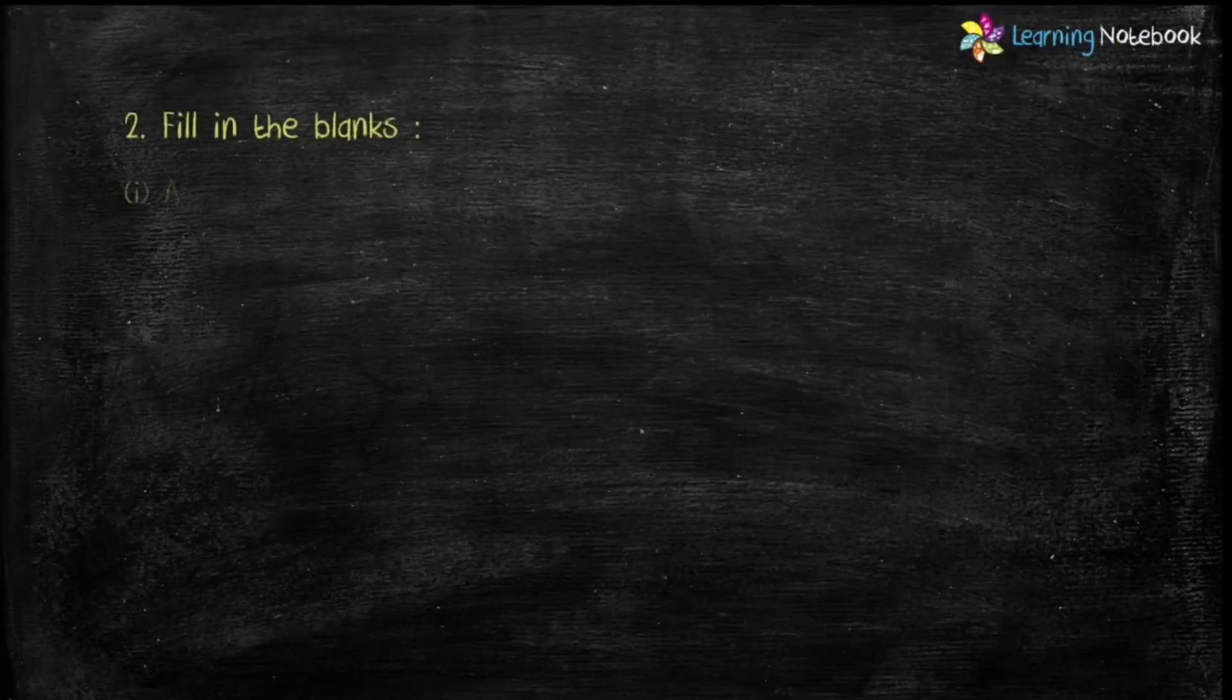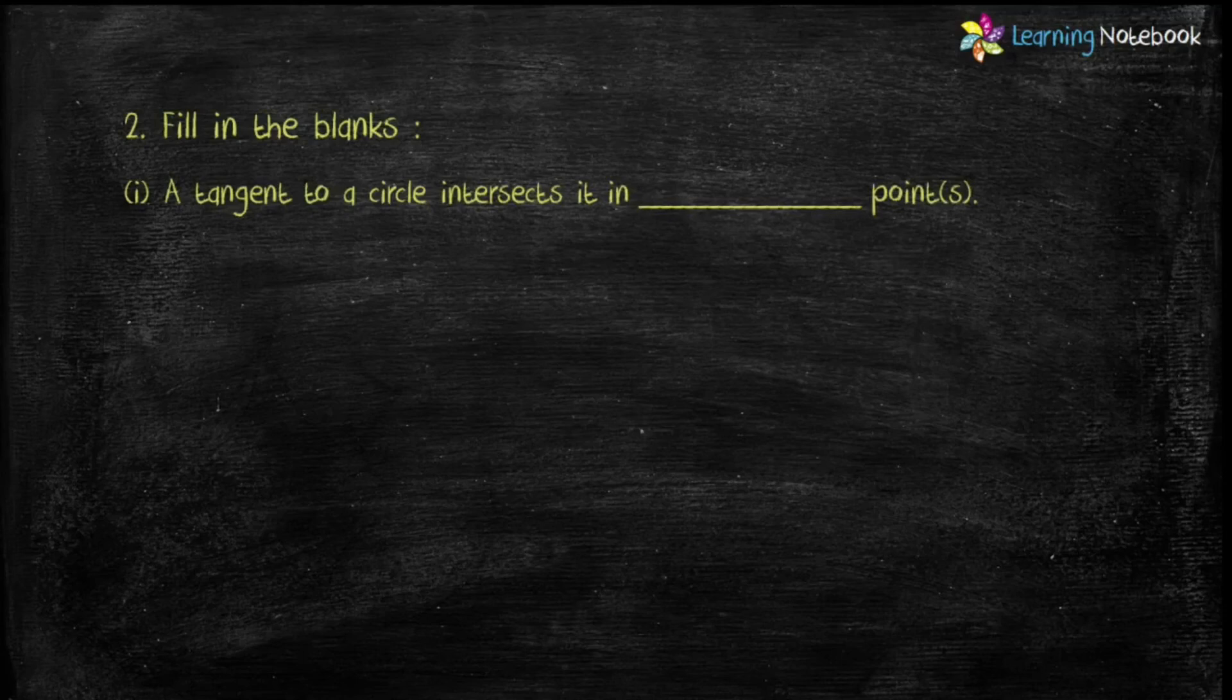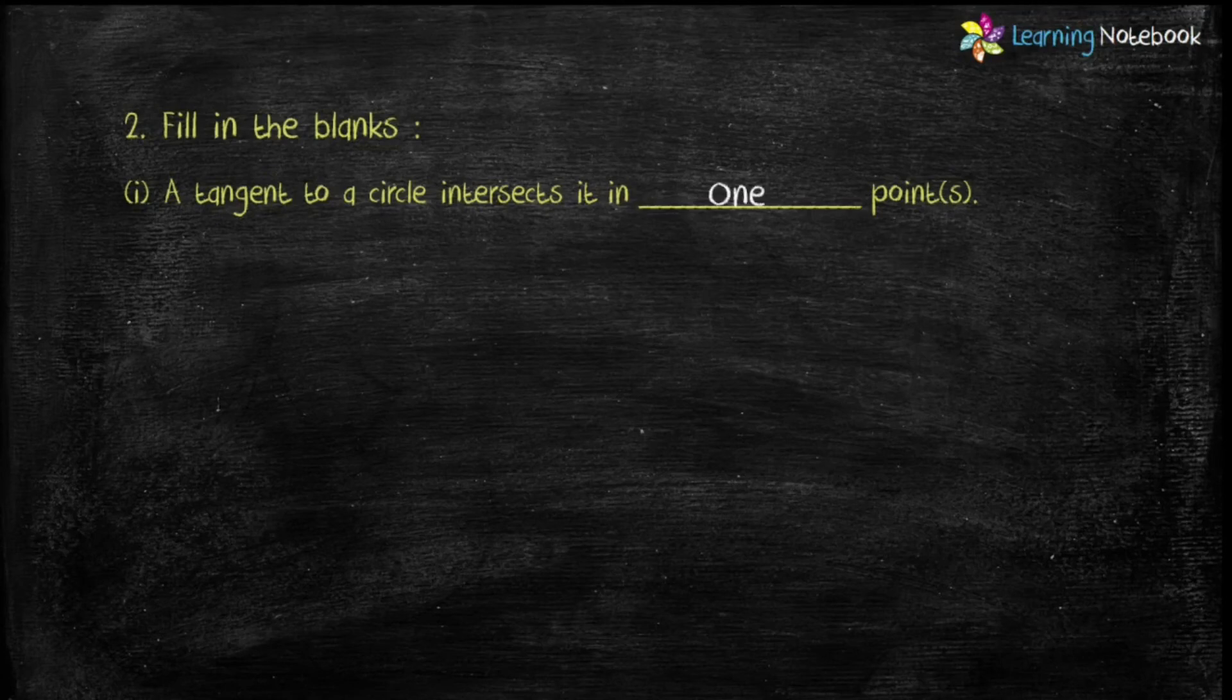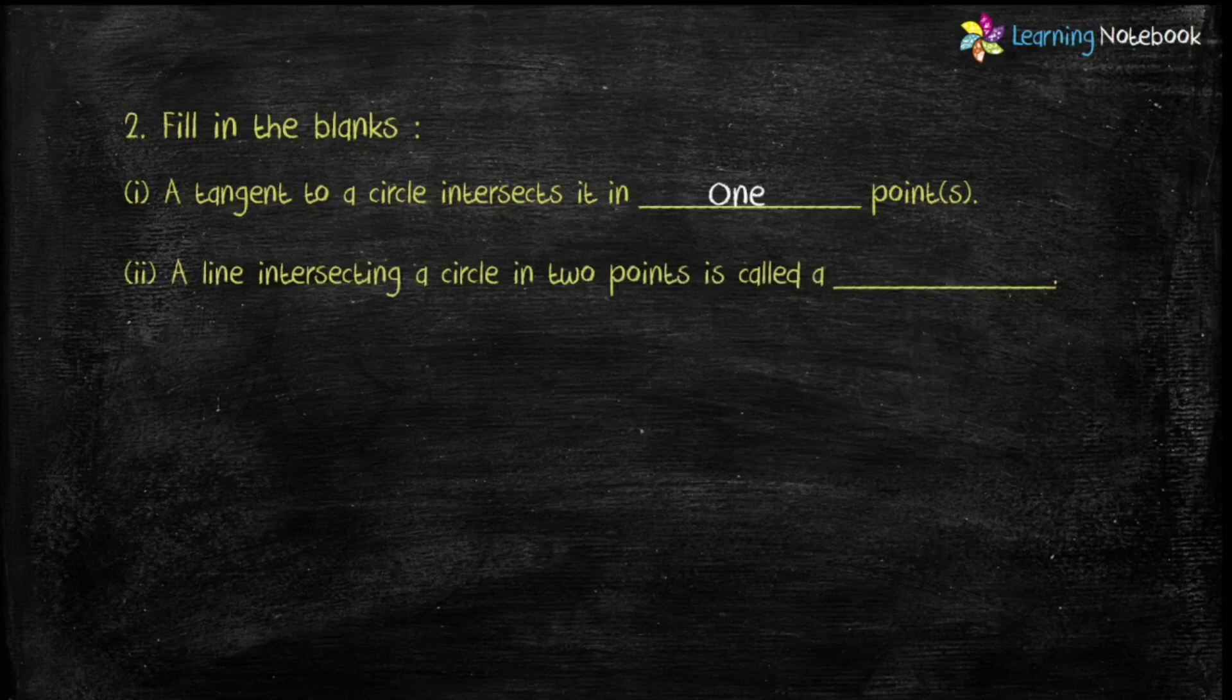Question 2 is fill in the blanks. First is a tangent to a circle intersects it in how many points? One point. Second part is a line intersecting a circle in two points is called a secant.